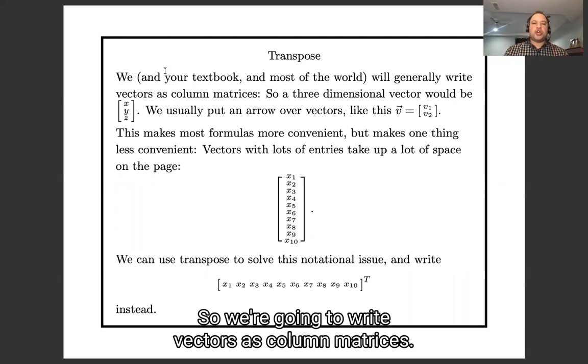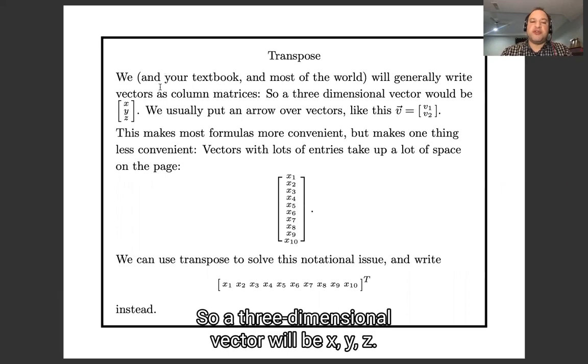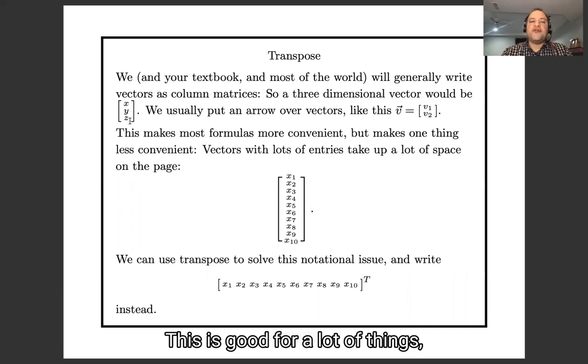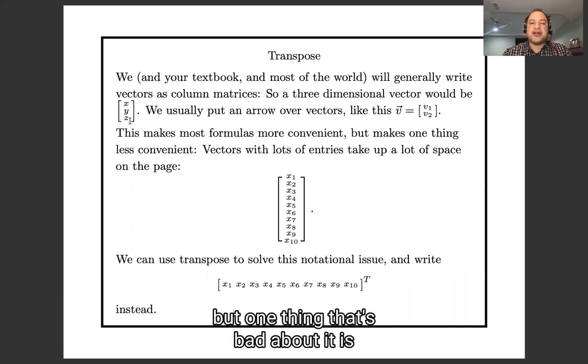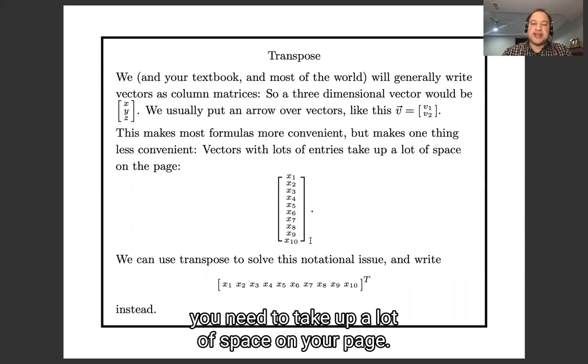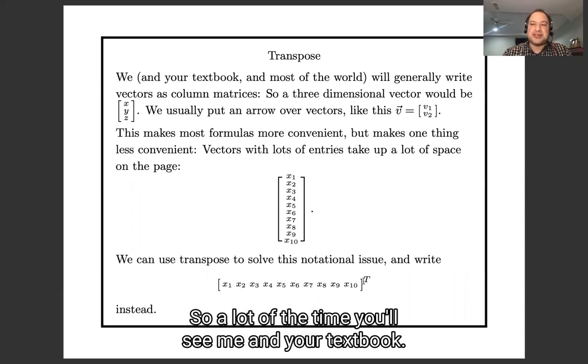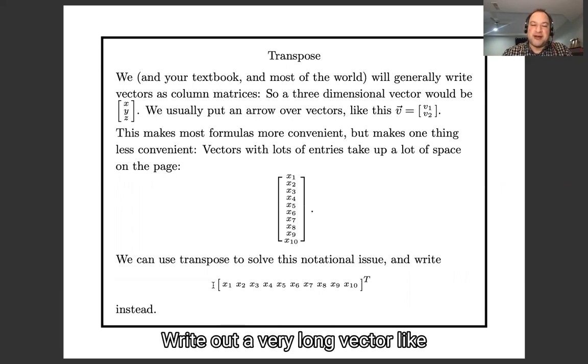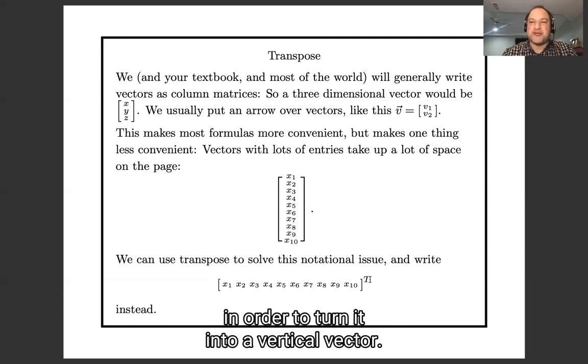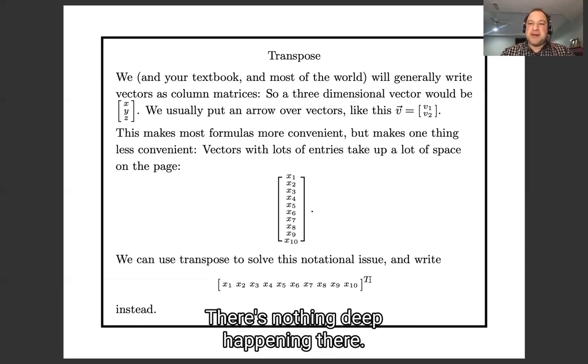And there's one small silly thing which transpose is useful for immediately, and that's going to be the last thing I tell you. So we are going to write vectors as column matrices, so a three dimensional vector would be X Y Z. This is good for a lot of things, but one thing that's bad about it is if you want a 10 dimensional vector, you need to take up a lot of space on your page. See, here's 10 entries stacked up. And it would be a lot easier to read if I wrote it horizontally. So a lot of the time you'll see me and your textbook write out a really long vector like this horizontally and then just toss a transpose on the end in order to turn it into a vertical vector. There's nothing deep happening there - it's just about saving space on the page, so it's easier to write.